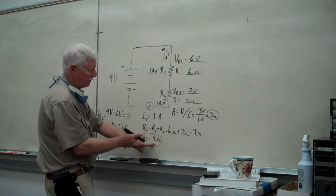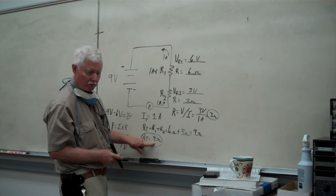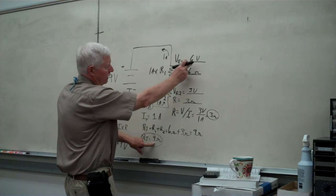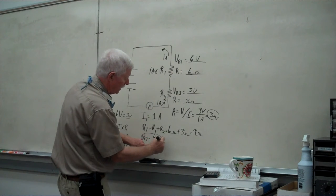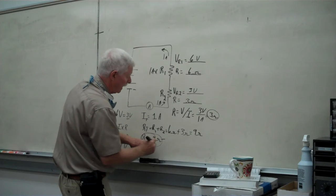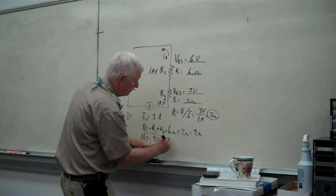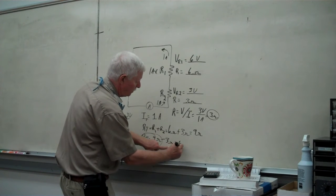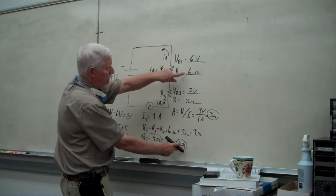now we can take this and subtract either one of these two to get the third one. Let's say I wanted to find out what this is to check it. I could take that 9 ohms and subtract, say, the 3 ohms, and I get 6 ohms. What that's telling us, that's what this one is.